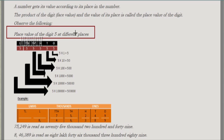The face value of a digit is the digit itself — so the face value of 5 is always 5. The place value is calculated by multiplying the face value with its positional value. For the 5 in ones place: 5 × 1 = 5, so the place value is 5.